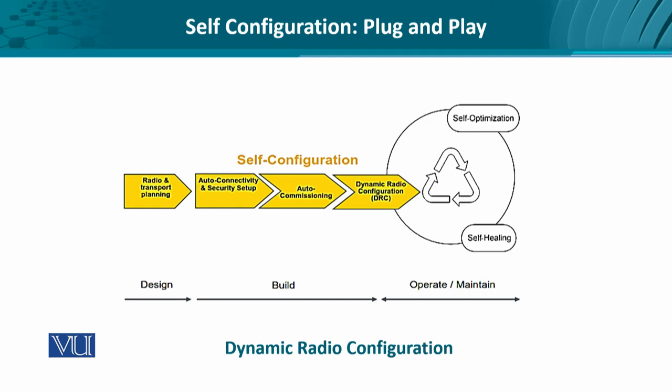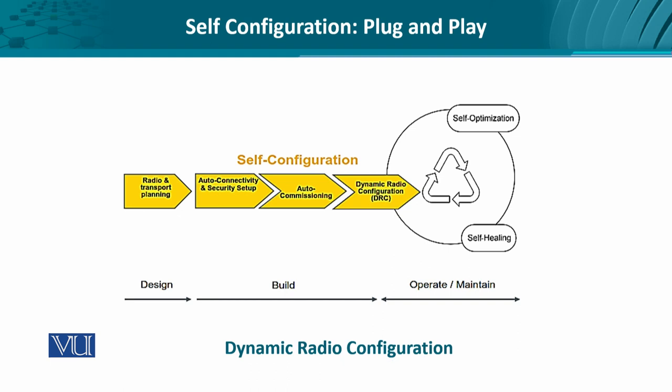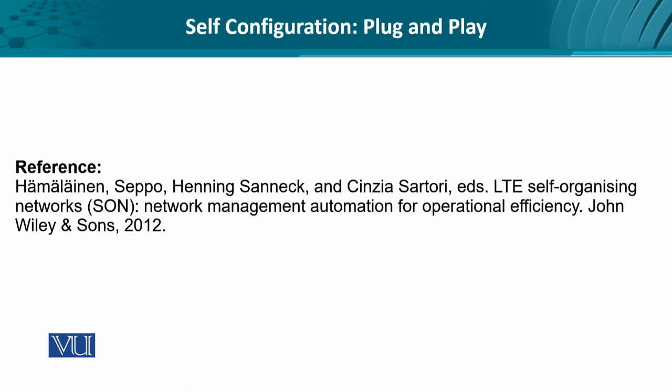The design, build, operate, and maintain states are very much part of any network lifecycle. We are already through with auto-connectivity, security setup, and auto-commissioning. In the dynamic radio configuration phase, the device adjusts to network conditions and the channel model, going through continuous monitoring and reporting to optimize its behavior and, if there is an error, to heal itself. These use cases dictate automated behavior where human involvement is not present — this is what we call plug-and-play. The reference is Saipo Hamilainen, 'Long-Term Evolution Self-Organizing Networks.'